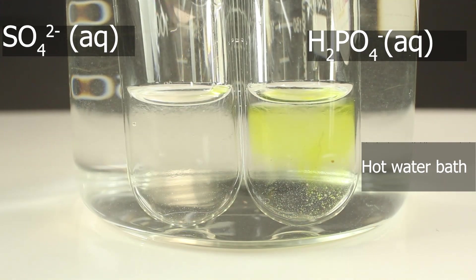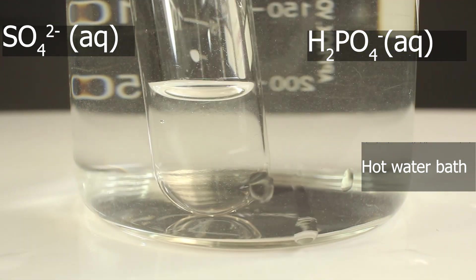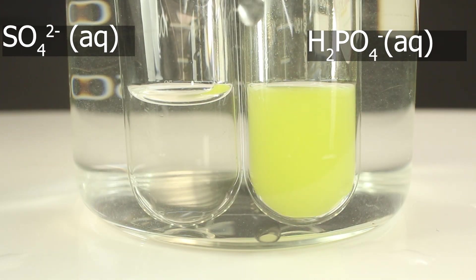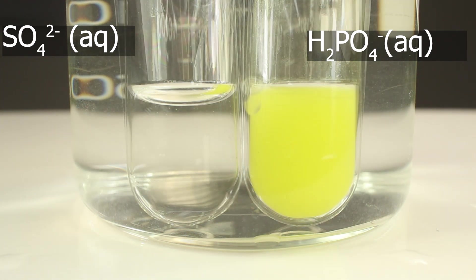Positive result is already visible. Yellow color, yellow solution or maybe precipitate. Yes, now it's clear. It's precipitate. Bright yellow precipitate. Positive sign for the presence of phosphate ions.